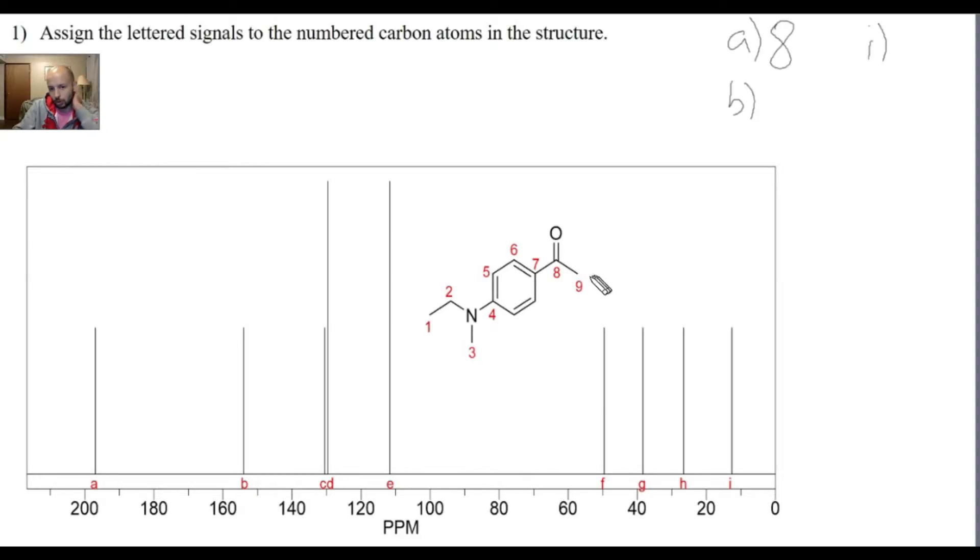Now, in determining between them which one is the most shielded, carbon 9 is still next to this electronegative oxygen, so I wouldn't give it that assignment. Carbon 3 is right next to the nitrogen, whereas carbon 1 is one step away from the nitrogen and it's separated with this CH2. For that reason, I would assign peak I to carbon 1.